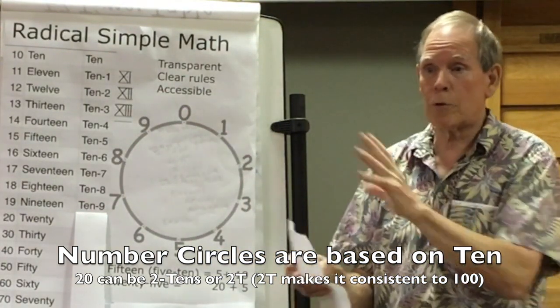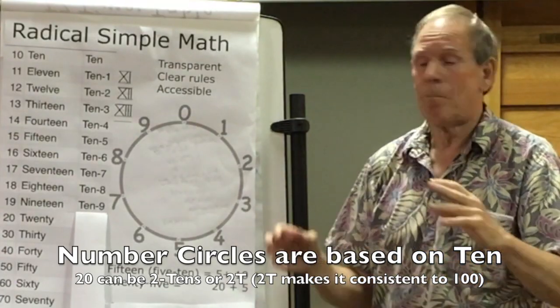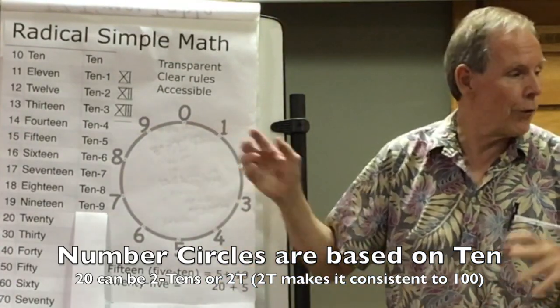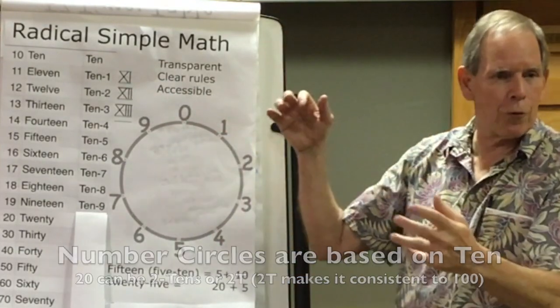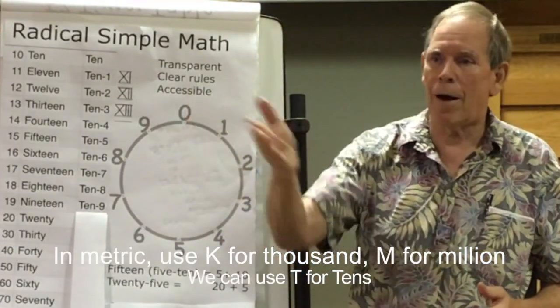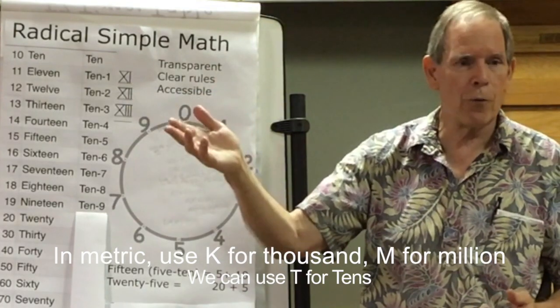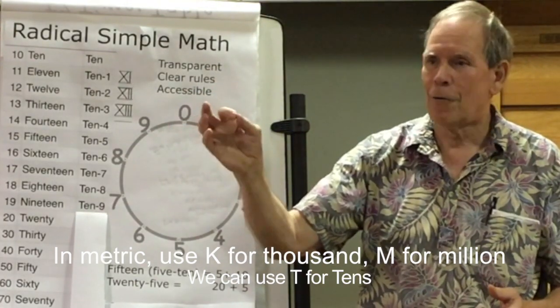The Asians use the abacus, which is all ten based. The number circle is ten based, so it reminds you that that's where you're at. So you don't have to remember thousands of words. If you have 128K, what does that mean? Who knows?